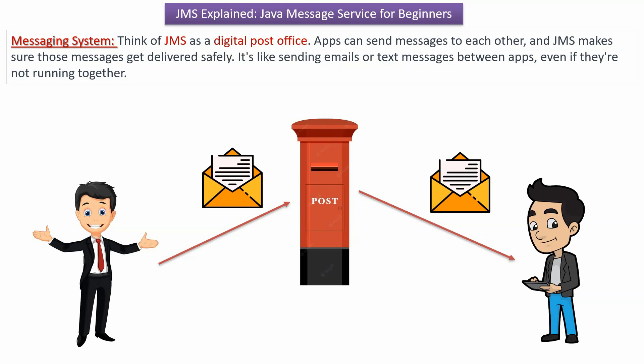Messaging system. We can think of JMS as a digital post office. Using that, apps can send messages to each other and JMS makes sure those messages get delivered safely. It is like sending emails or text messages between apps, even if they are not running together.